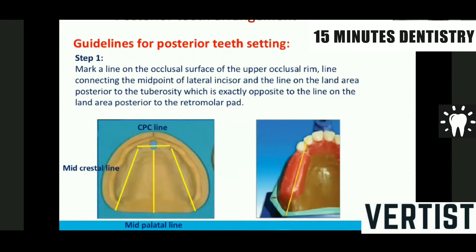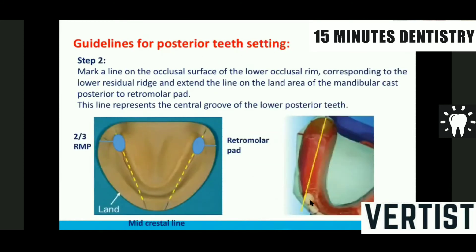Four guidelines before we start posterior teeth arrangement. First, draw all the reference lines — important while arranging the posterior teeth. One line is drawn from the center of the lateral incisor joining the mid-crestal line on the land of the cast; this will denote the palatal cusps. The second guideline is to mark another line from the distal surface of the canine — the distal plane — and join it to the center of the crest line at the retromolar pad; this will denote the central groove of all four posteriors.